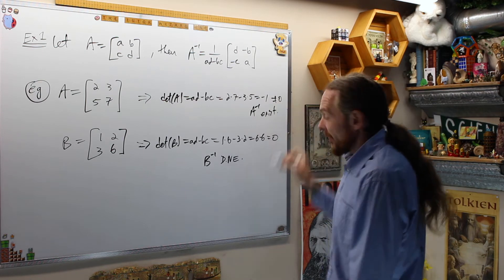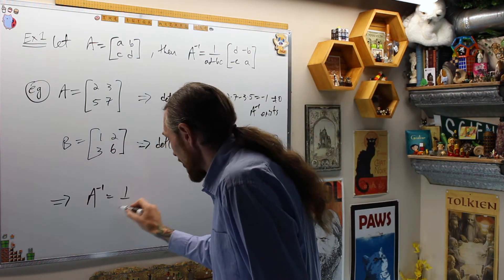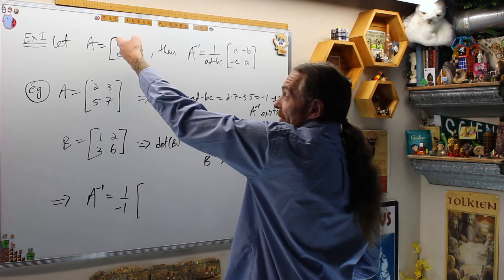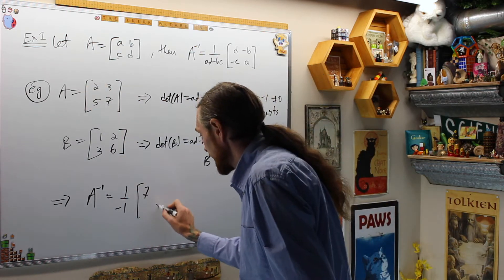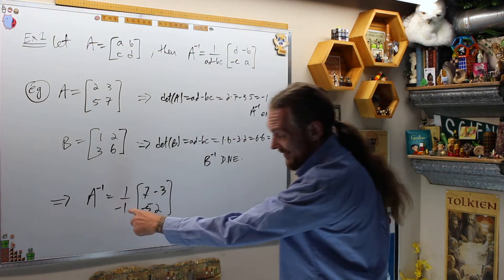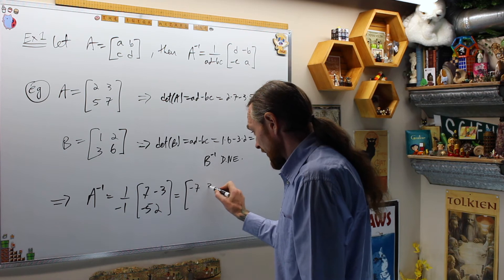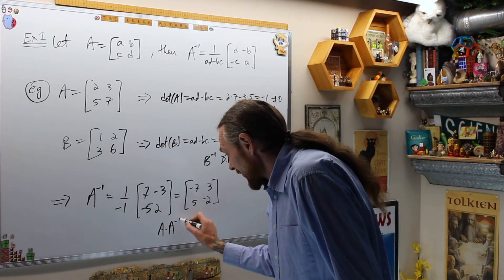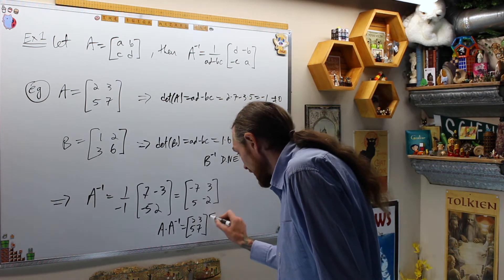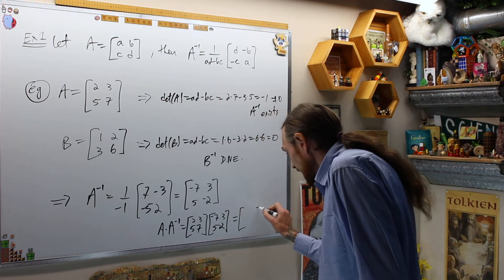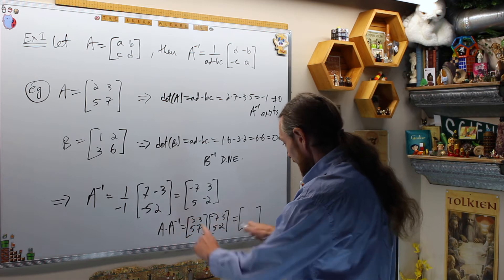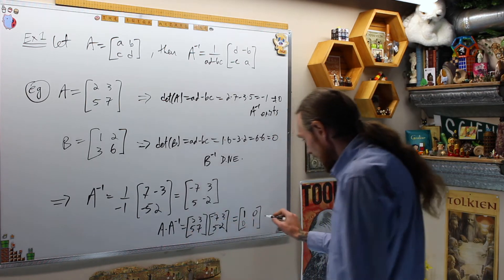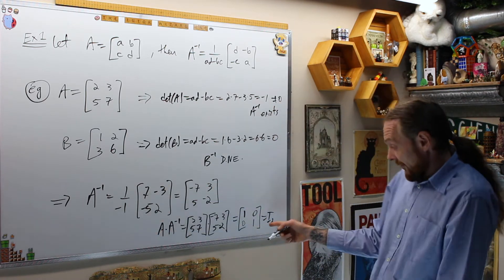Since A inverse exists, A inverse equals 1 over -1 times the adjoint. You take the main diagonal entries, flip them, and put negatives on the off-diagonal. So we flip the 7 and 2 and put negatives on the others, giving [-7, 3; 5, -2]. Let's verify: A times A inverse = [2,3;5,7] times [-7,3;5,-2] = [-14+15, 6-6; -35+35, 15-14] = [1,0;0,1]. We get the identity matrix — which is the definition of inverse matrix.